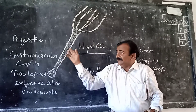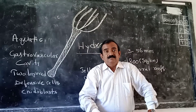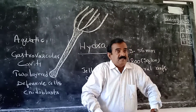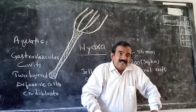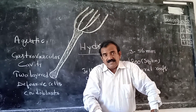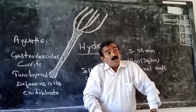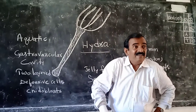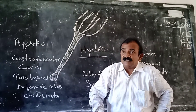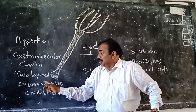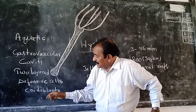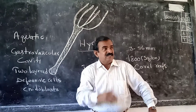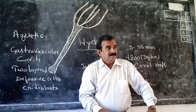These animals have two layers. How many layers? Two layers — an outer layer and an inner layer. The outer layer has special defensive cells, and they are called nematoblasts. They are called nematoblasts. These are defensive cells that protect the organism.